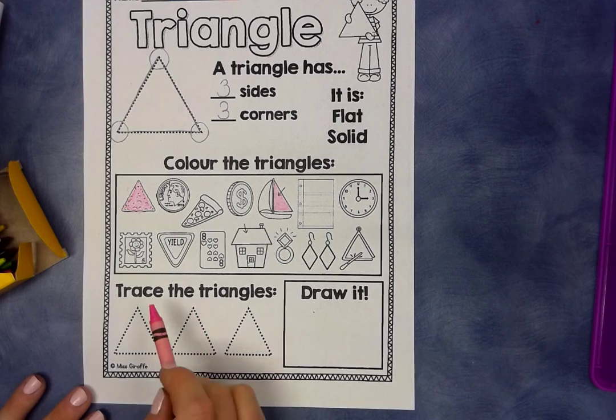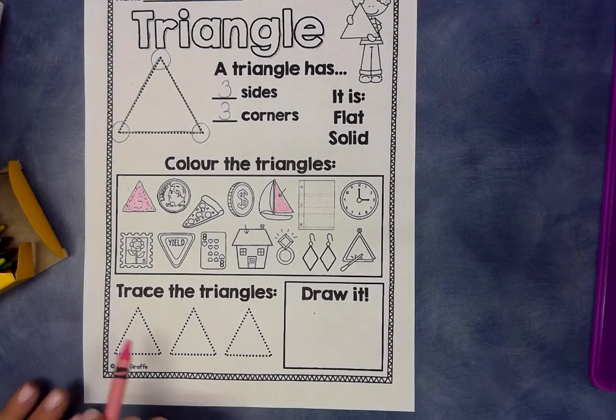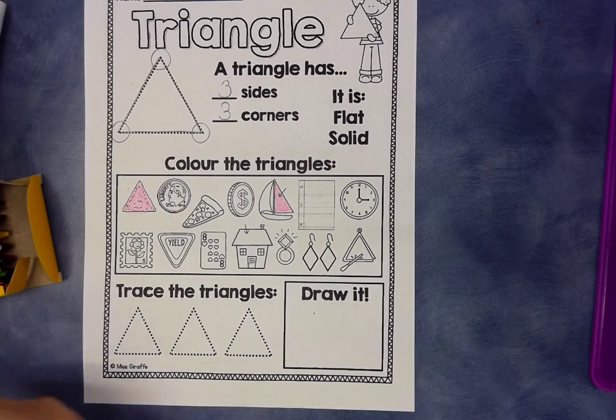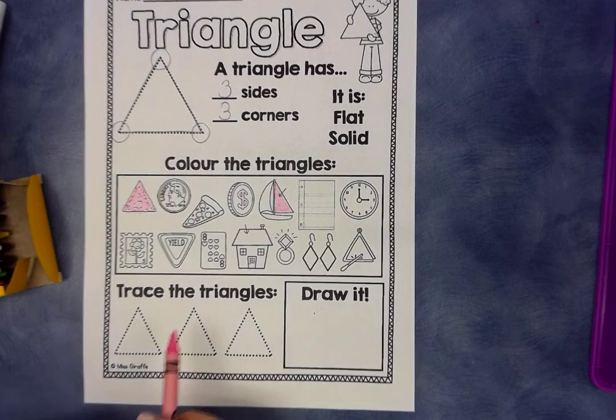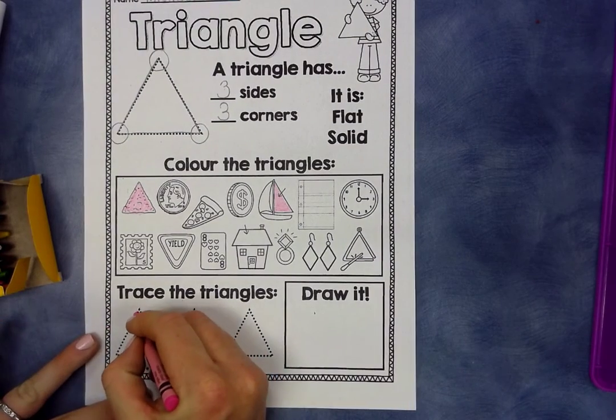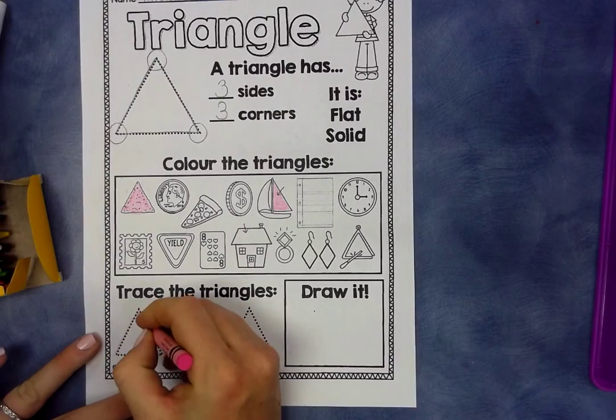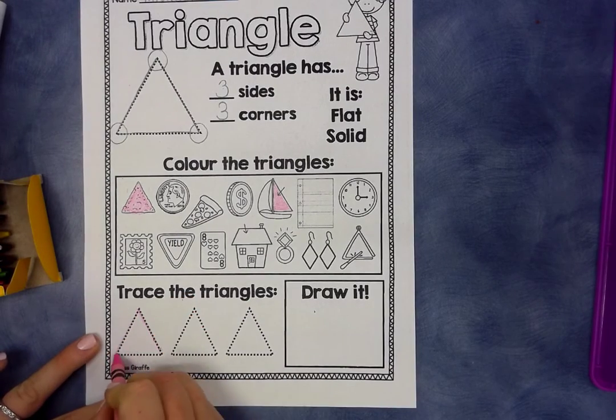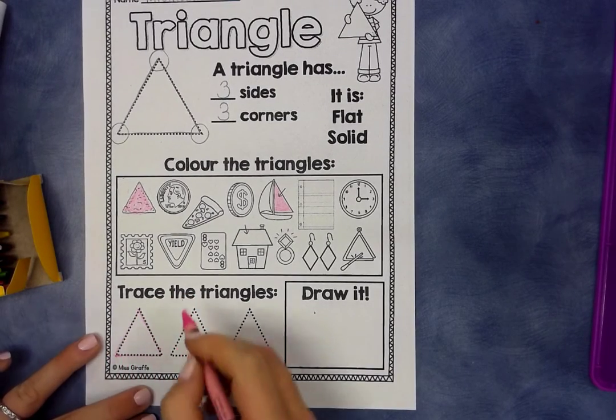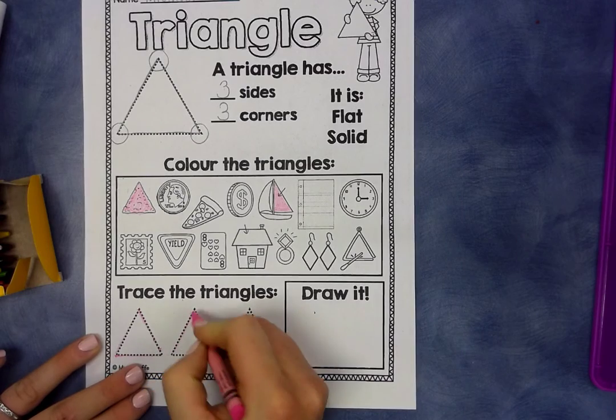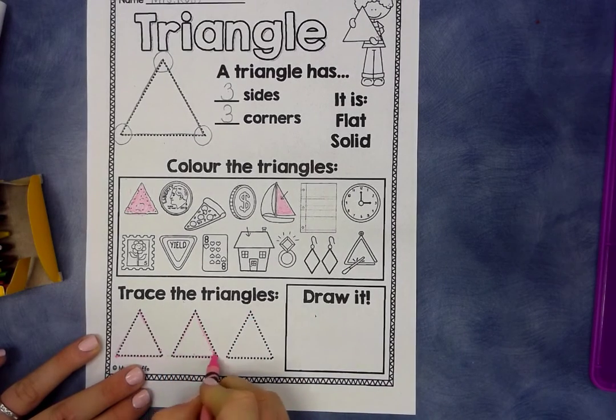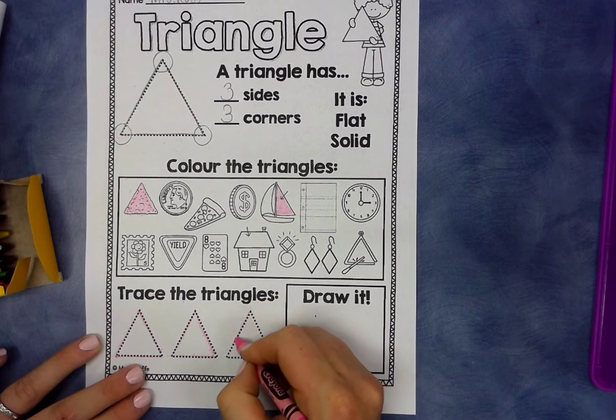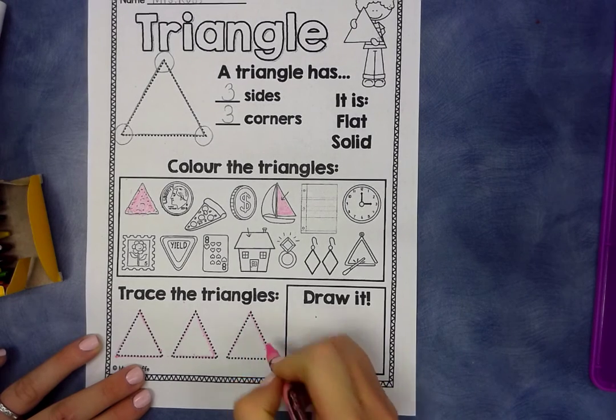Now it goes down to the bottom and it says trace the triangles. You could either use your pencil or you can use your color, whichever you would like. I'm going to use my color since I have it in my hand and I'm going to trace. Remember, tracing means going over the lines. You're going over the dots that are already there. You're not making anything new. You're just going over it.